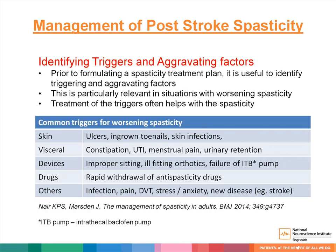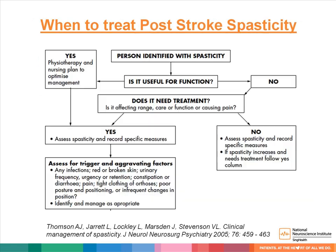Prior to instituting treatment, it is good to assess for triggering or aggravating factors for the presenting spasticity, especially in situations when the spasticity has stabilized but took a turn for the worse. Often, attention to relieving these factors will serve to lessen the spasticity without the need for spasticity-specific treatment. Here is a simple algorithm by Thomson et al. which illustrates how a person with spasticity should be assessed for treatment needs.